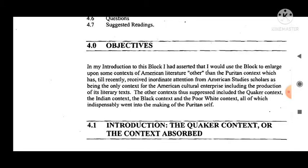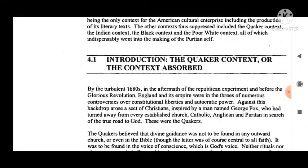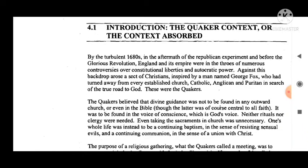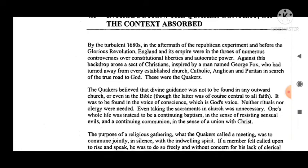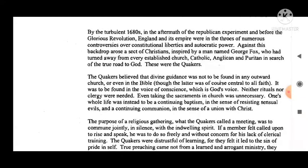These four contexts — the Quaker, the Indian, the Black, and the poor white — all indispensably went into the making of the Puritan self. By the turbulent 1680s, in the aftermath of the republican experiment and before the Glorious Revolution, England and its empire were in the throes of numerous controversies over constitutional liberties and autocratic power.